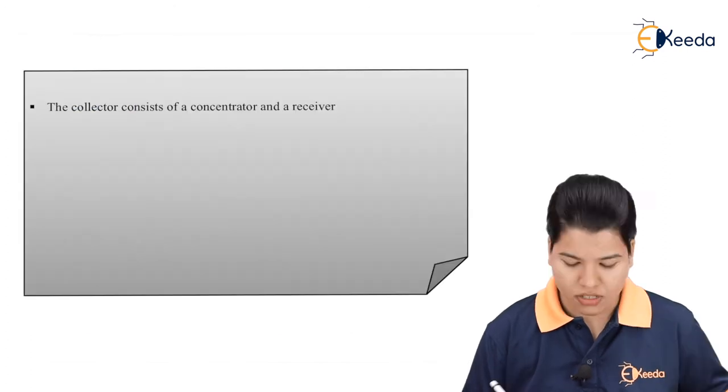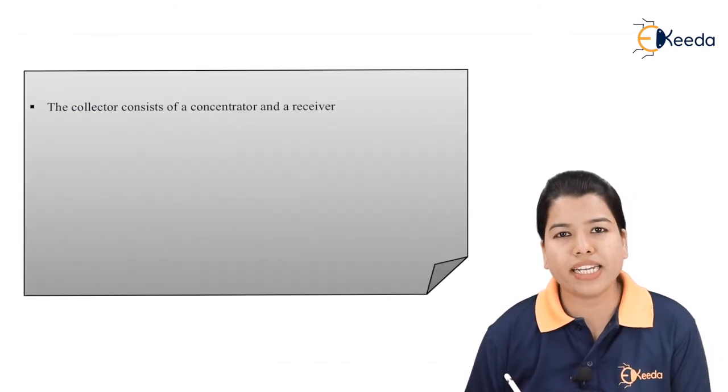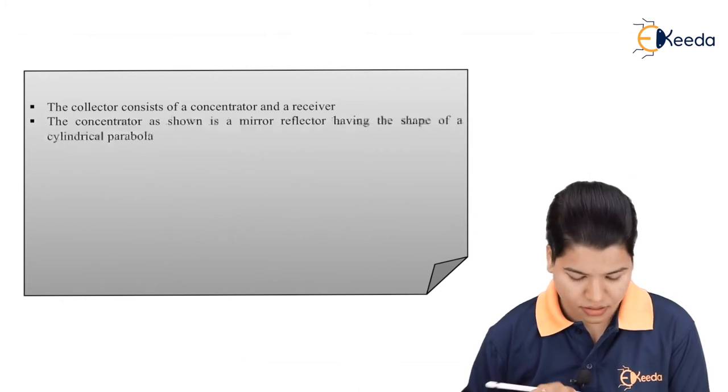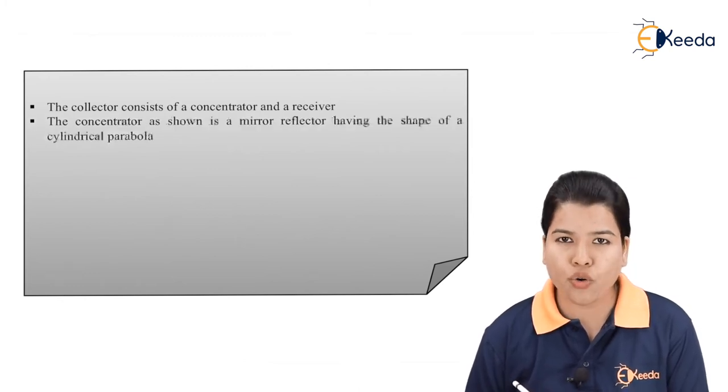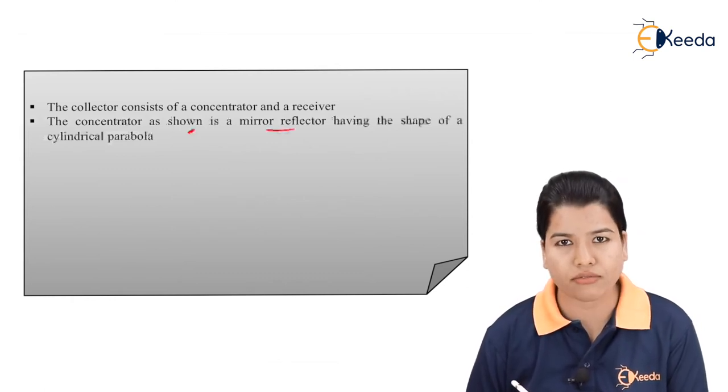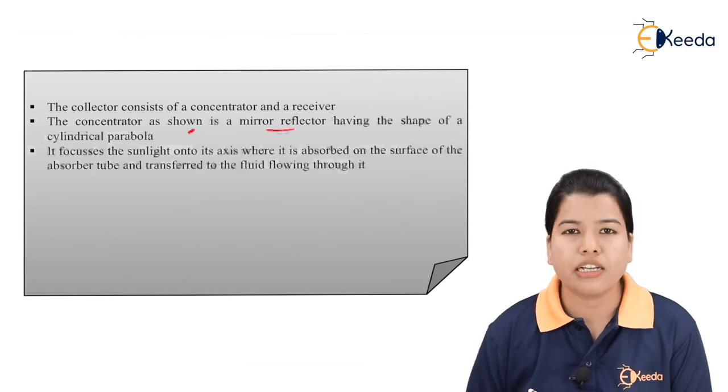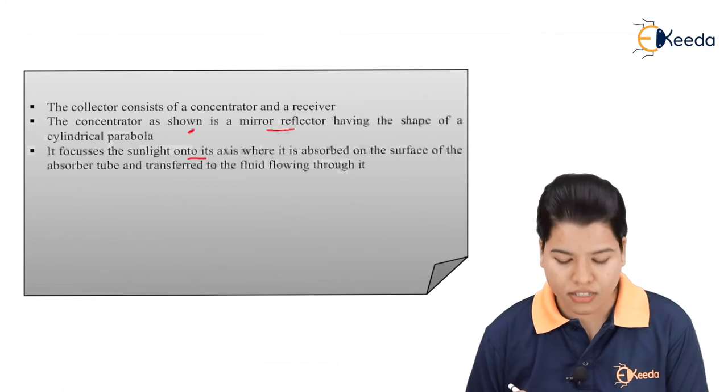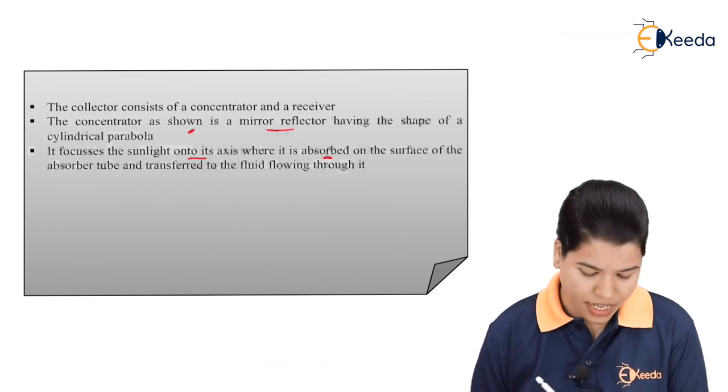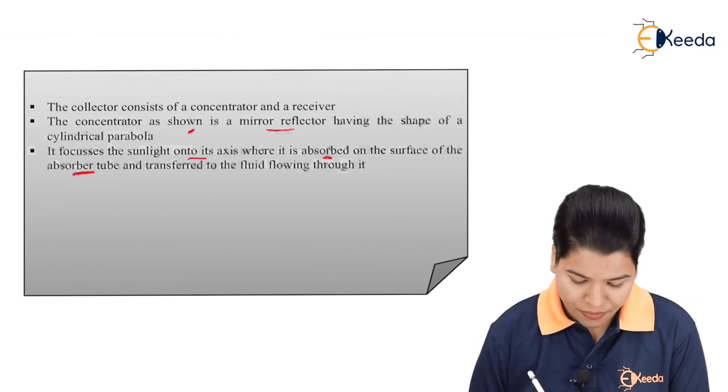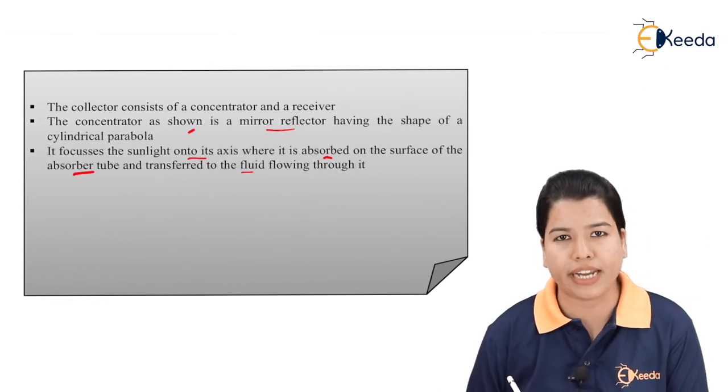Let us see its working. The collector basically consists of one concentrator and one receiver. The concentrator shown in figure is a mirror reflector having the shape of the cylindrical parabola. It basically focuses the sunlight onto its axis where it is absorbed on the surface of the absorber tube first and then it is transferred to the fluid flowing through it.